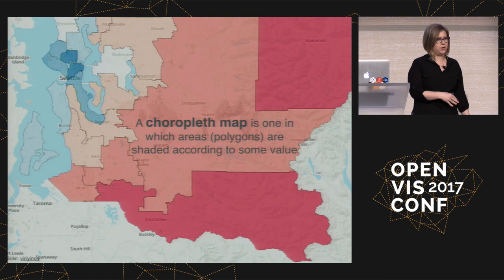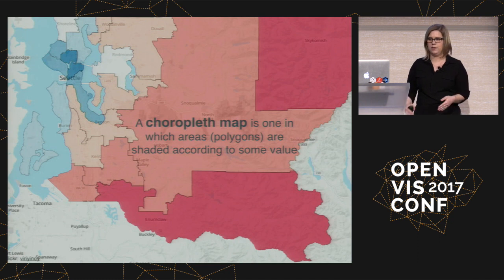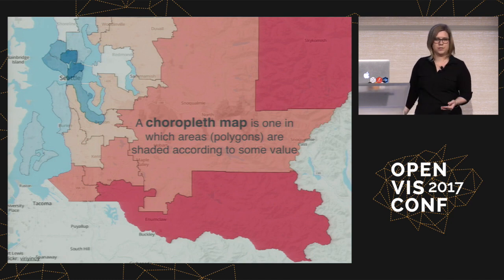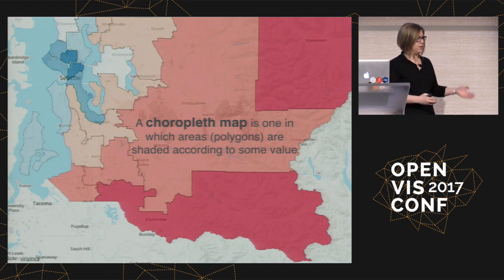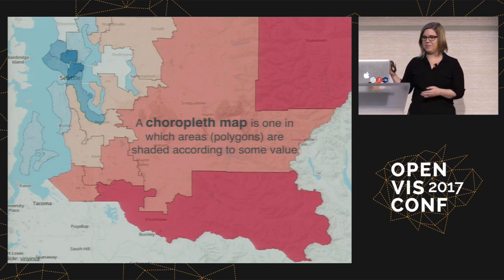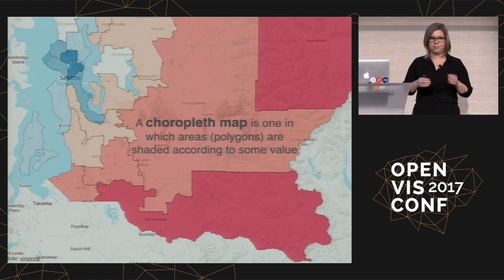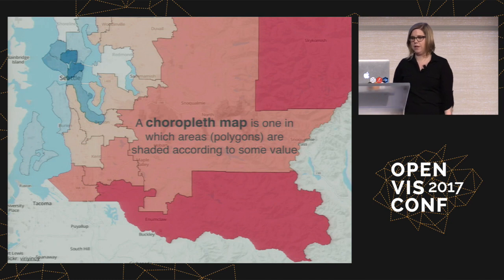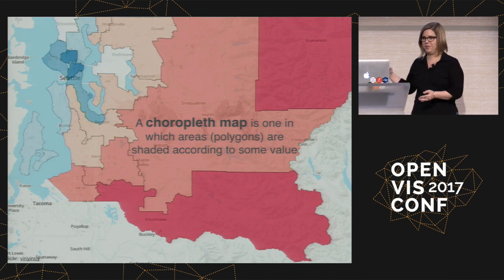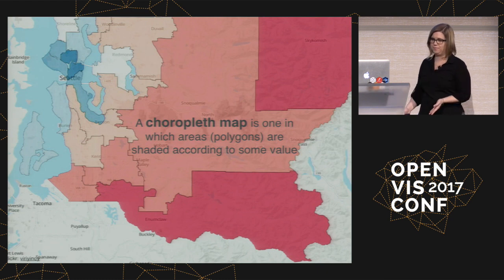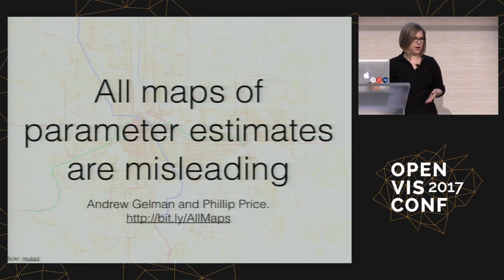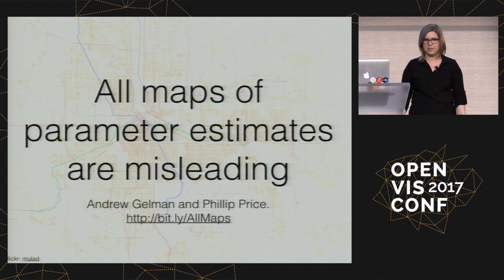Red is less than 50% voting for the measure, blue is more than 50%. You can already see a problem: small areas look unimportant, and big areas look very important. The measure passed because the very blue places are very dense parts of Seattle, while the enormous swaths of red are less urban areas surrounding the city. Andrew Gelman has a great paper called 'All Maps of Parameter Estimates Are Misleading' about this exact problem.